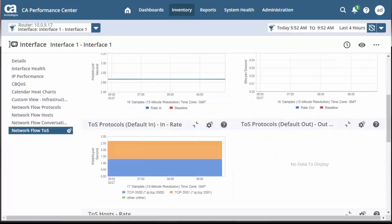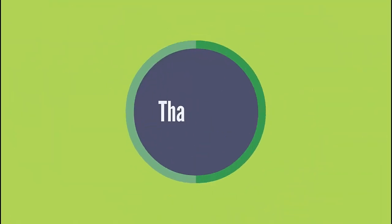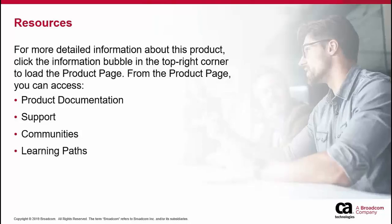In this way, without opening the CA NFA console, you can generate and view your required reports using CA Performance Center. Thank you for watching this video. For more detailed information about this product, click the information bubble in the top right corner to load the product page. From there, you can visit product documentation, support, communities, or see the learning paths.